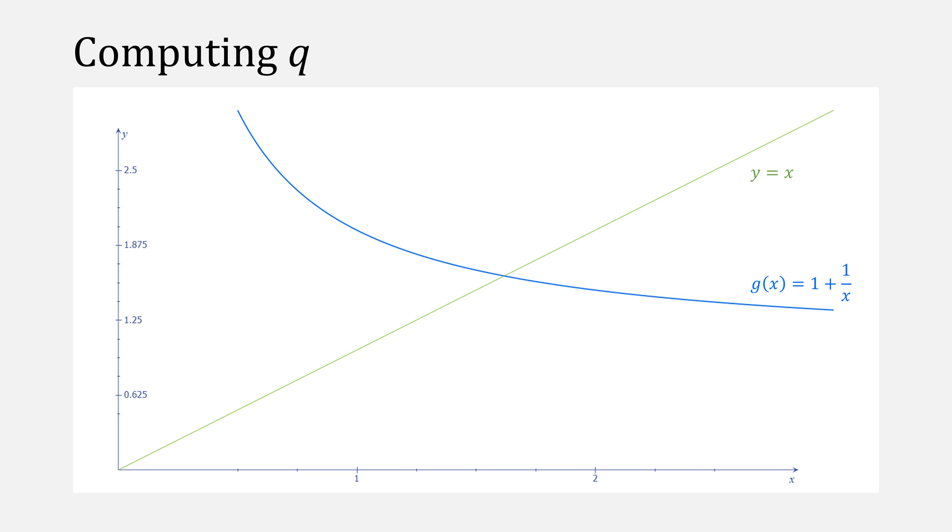So how do we go about picking a good value for q? Let's first look at how fixed-point iteration works in action. If we pick a starting point of x1, we compute g of that point. Then this gives us our new point, x2, and we compute g of that point again, and repeat the process until this converges.